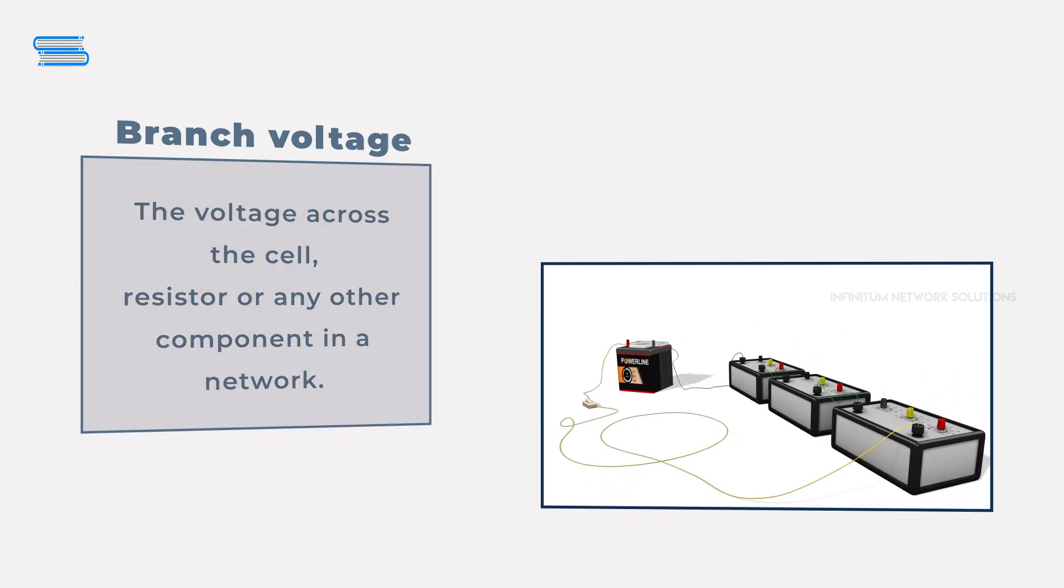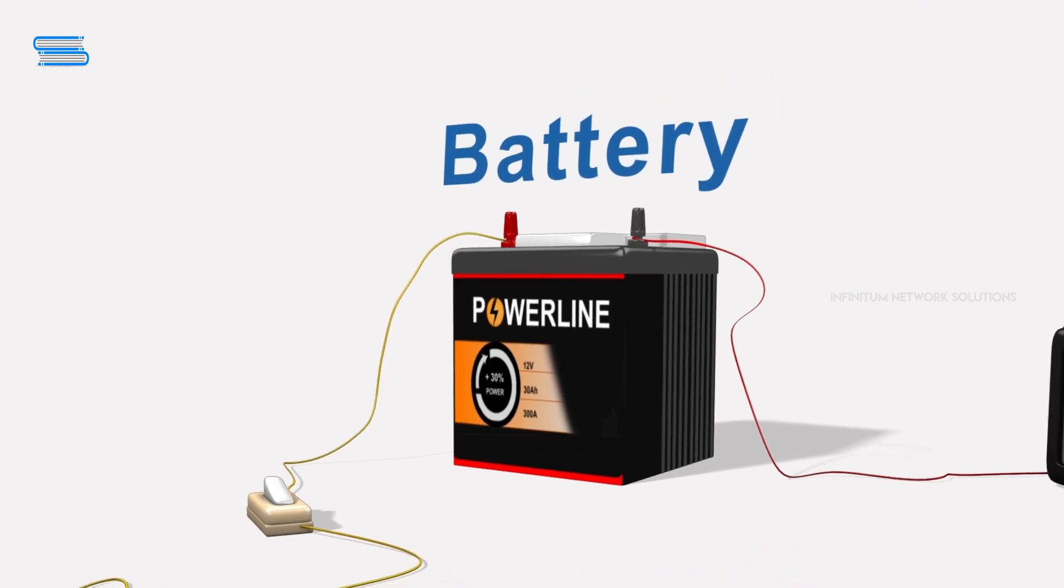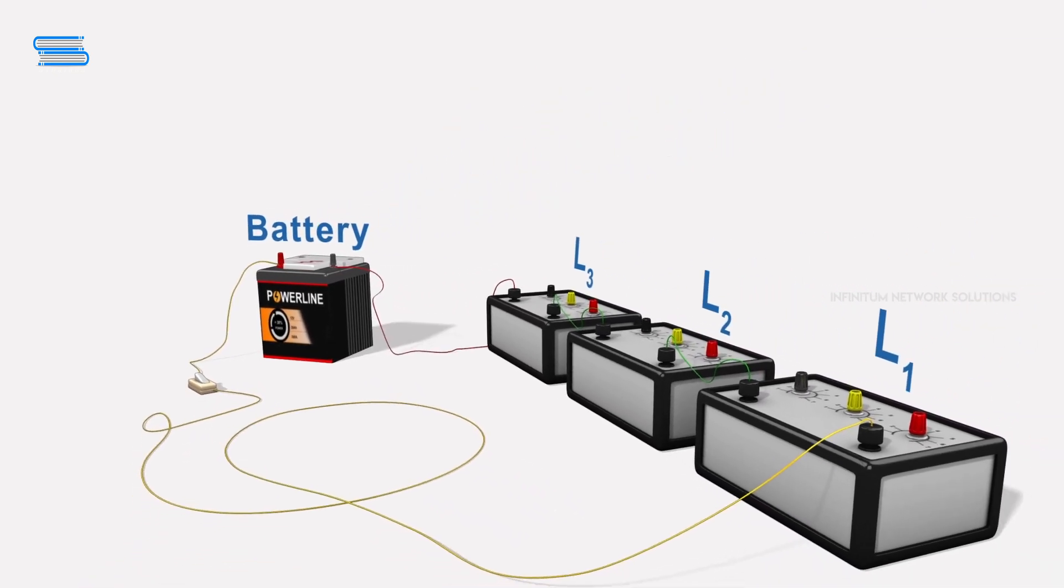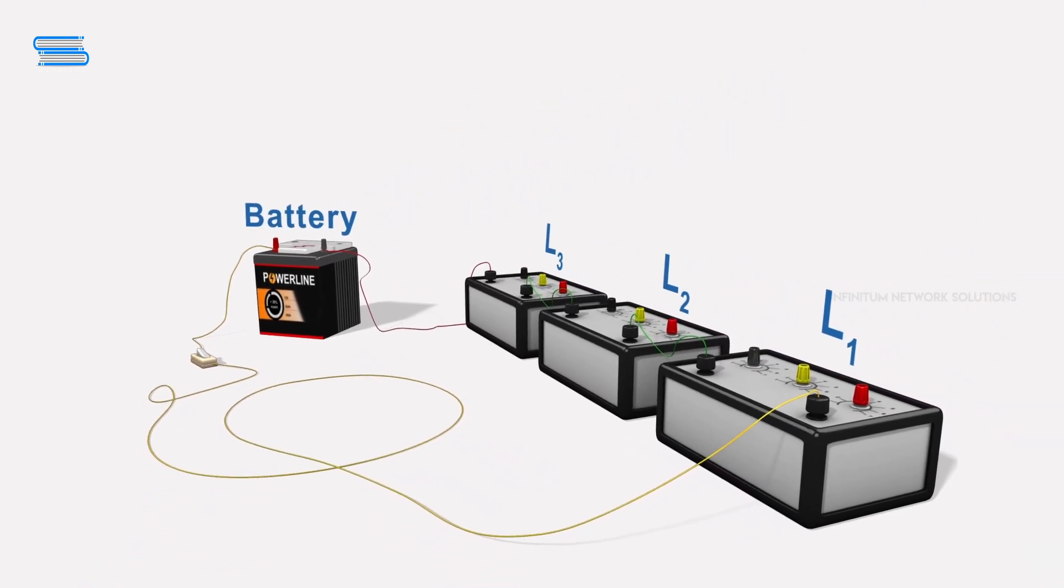Now to understand the law, let's look at a simple circuit with a battery and three loads. The loads are labeled as L1, L2, and L3, and the battery has a voltage of VA.